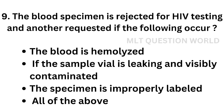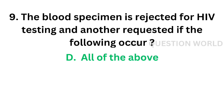Question number 9: The blood specimen is rejected for HIV testing and another requested if the following occur — option A, the blood is hemolyzed; option B, the sample vial is leaking and visibly contaminated; option C, the specimen is improperly labelled; option D, all of the above. The correct answer is option D, all of the above.